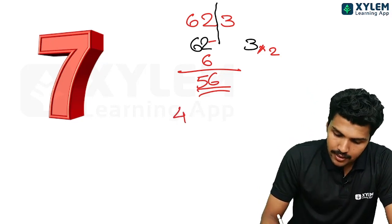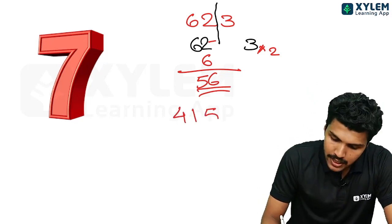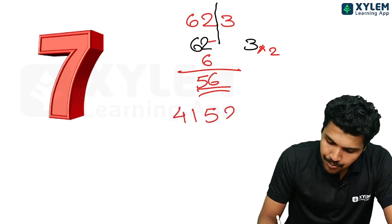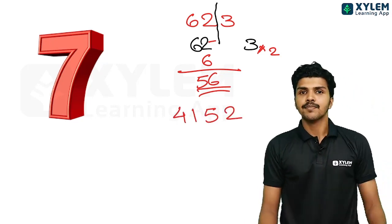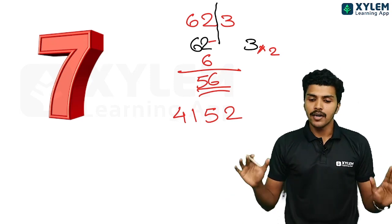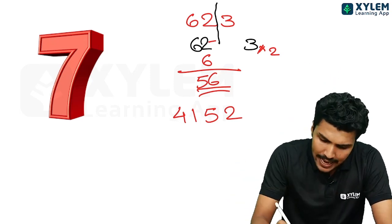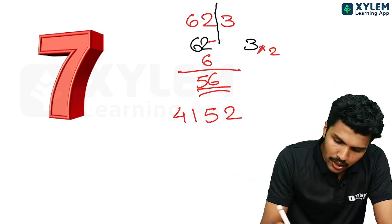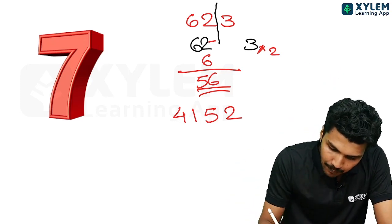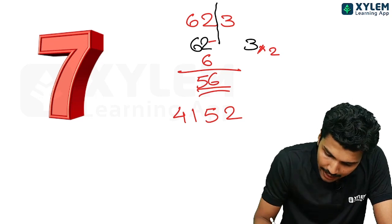If you want to ask about 4 digits, let's see 4 digits. For example, 4152 — this is the same method applied to a 4-digit number.